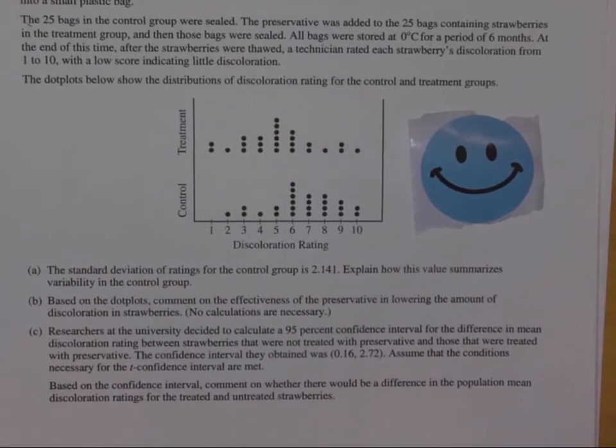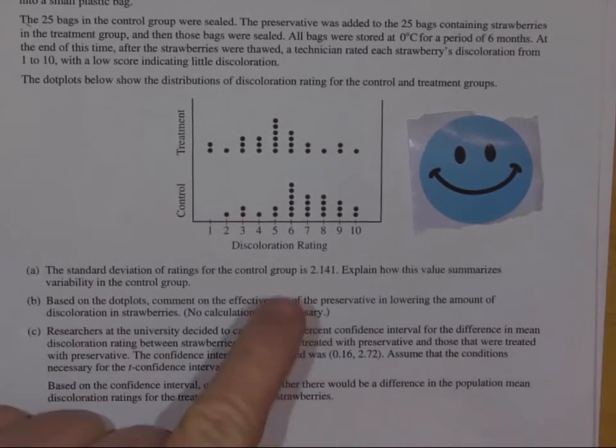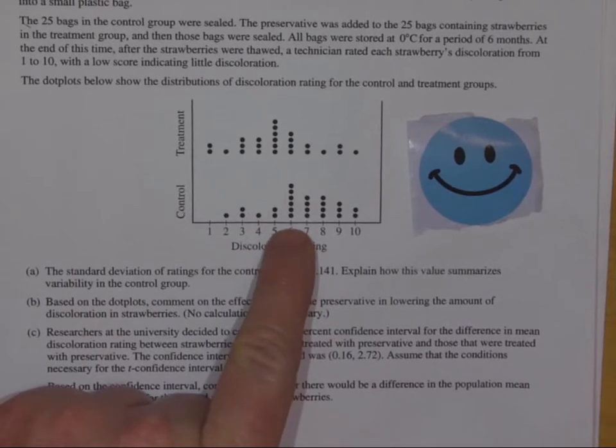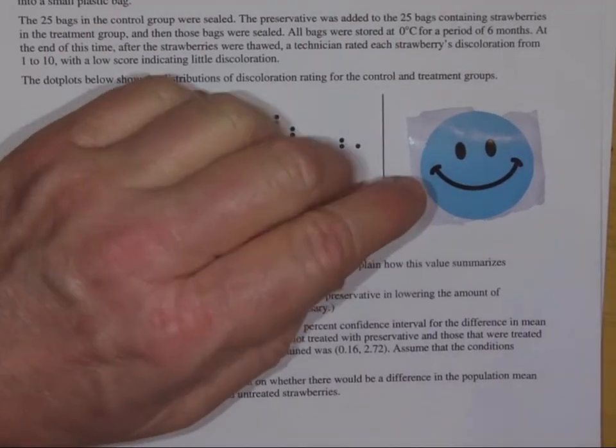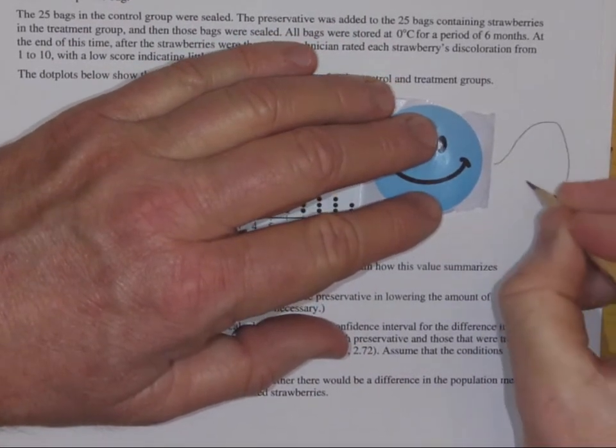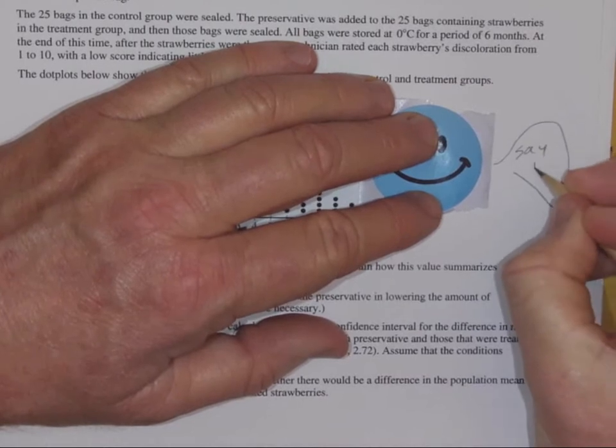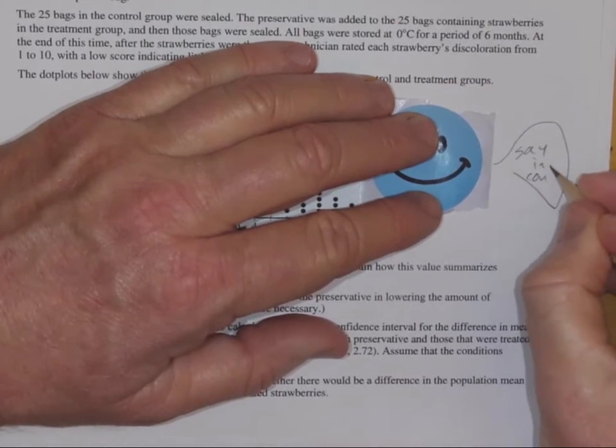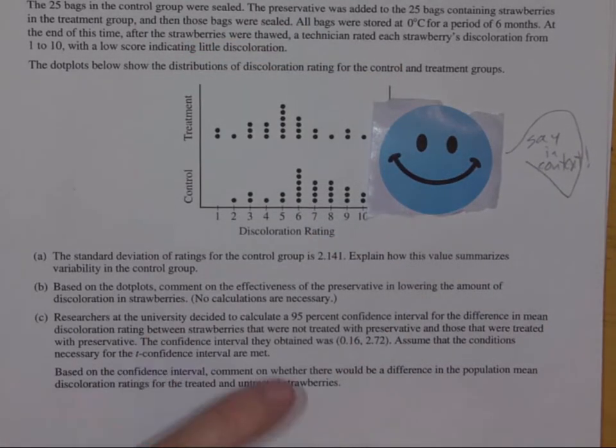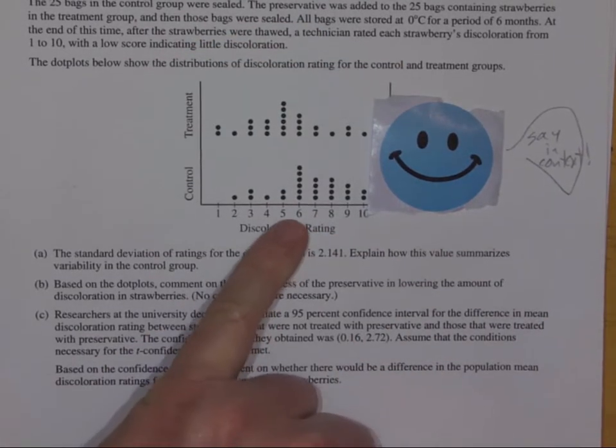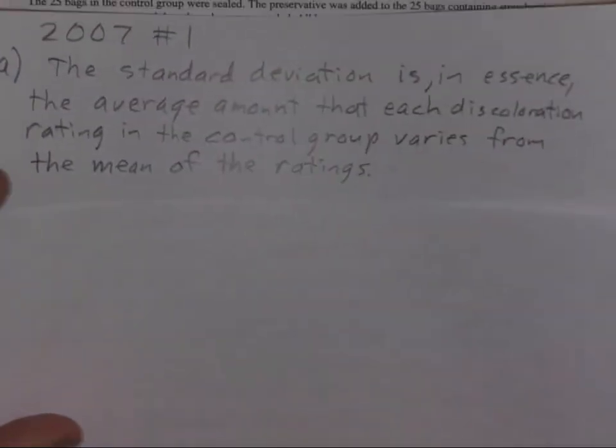So this first one, yes, that is a very typical question. You just have to describe what is the standard deviation in the context, and it said for the control group. So you had to basically say what is the average amount the points vary from the middle, but you have to say it in context. Say it in context, that's the thing that people left out. It's the average amount that the discoloration ratings vary from the middle.